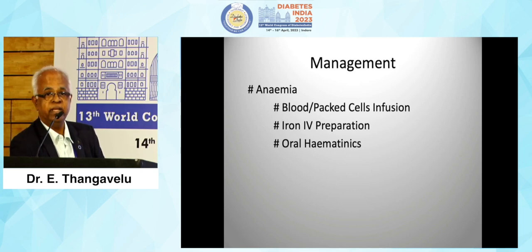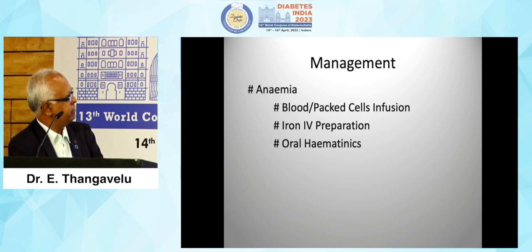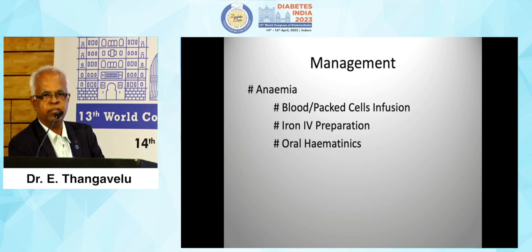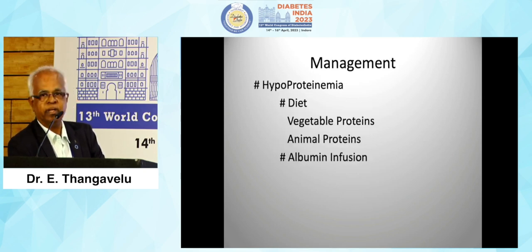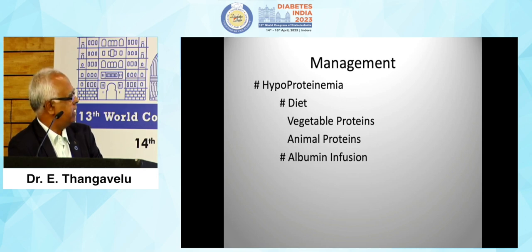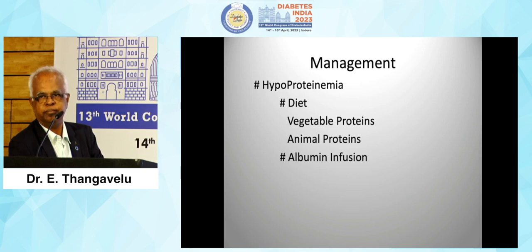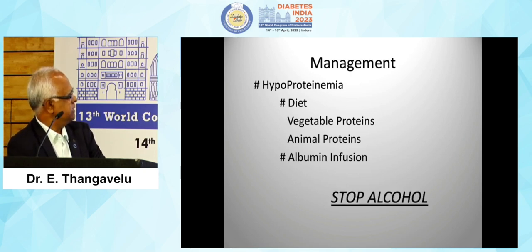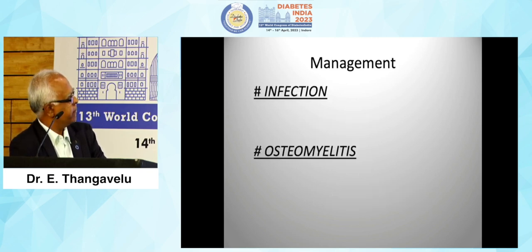Regarding the management of anemia: for severely anemic patients, give blood or packed cell transfusion; for moderate anemia, high IV preparation; for mild, oral hematinics. For hypoproteinemia management: start with diet — vegetable proteins and animal proteins, simply egg white. In severe hypoalbuminemia, give albumin infusion. Also advise male patients to stop alcohol.